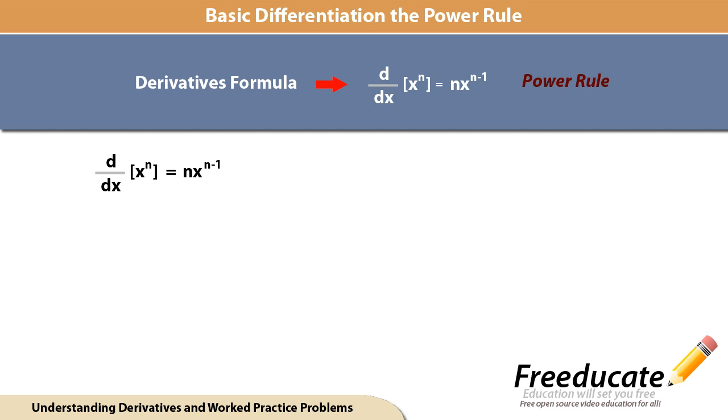The first problem is f(x) equals x cubed. If you match this up with the theorem, you'll see that we already pretty much have all this in line for us. We have the x and we have the cube, which is the n in the theorem.